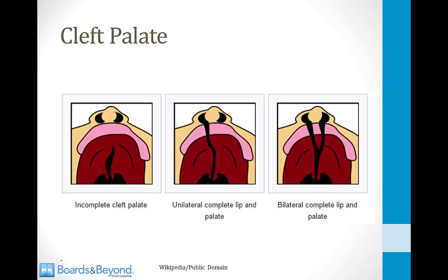Just like there are various forms of cleft lip, there are a number of forms of cleft palate. A cleft palate can be incomplete, and it may also occur together with unilateral or bilateral cleft lip deformities. And that concludes our module on cleft lip and palate.